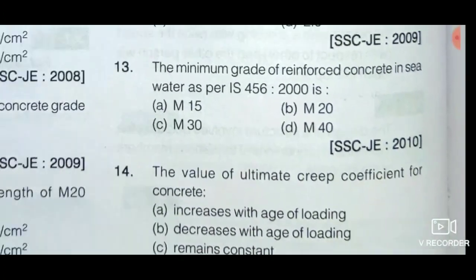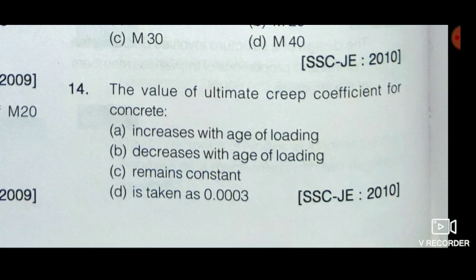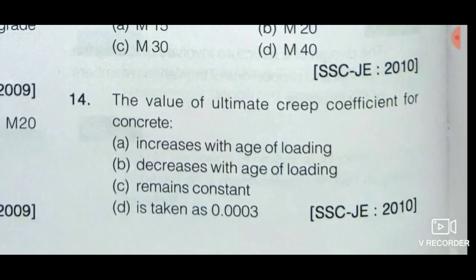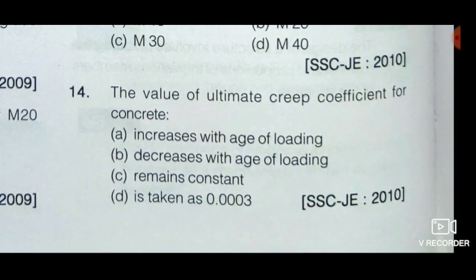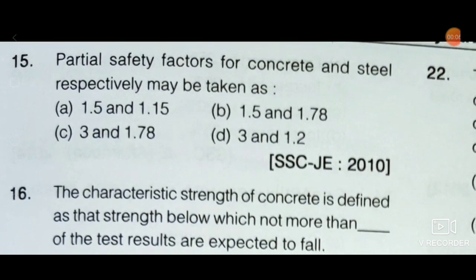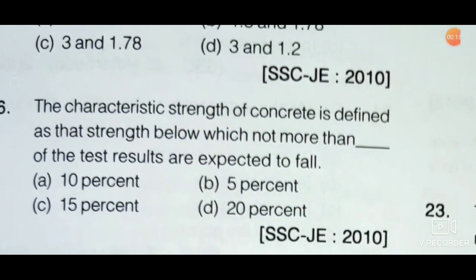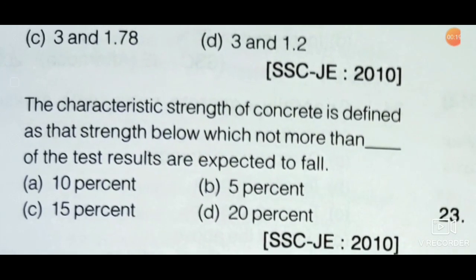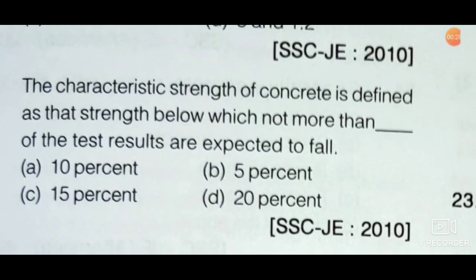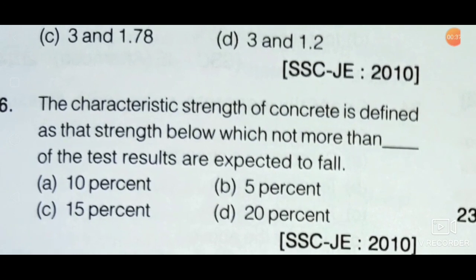Next question: The value of ultimate creep coefficient for concrete — option A: increases with age of loading, option B: decreases with age of loading. The value decreases with age of loading, so option B is the correct answer. Next: Partial safety factor for concrete and steel respectively — option A is correct: partial safety factor for concrete is 1.5 and for steel is 1.15. Next: The characteristic strength of concrete is defined as that strength below which not more than what percentage of results are expected to fall — option B is correct: 5%.